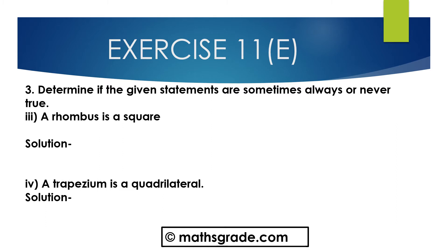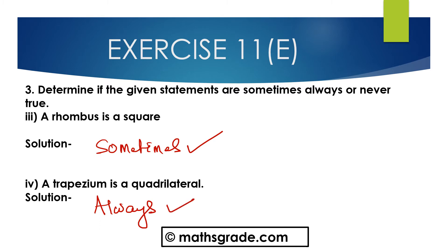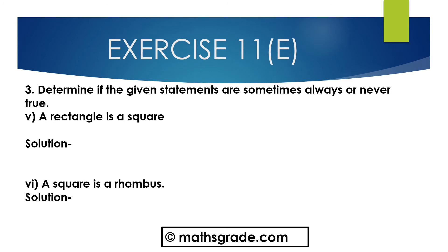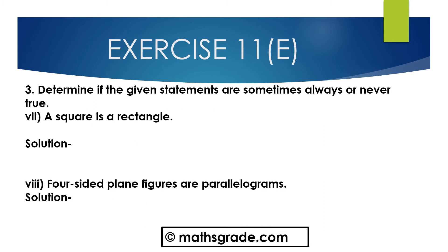Part C: a rhombus is a square — a rhombus is sometimes a square. Part D: a trapezium is a quadrilateral — a trapezium is always a quadrilateral. Part E: a rectangle is a quadrilateral — a rectangle is always a quadrilateral. Part F: a square is a rhombus — a square is always a rhombus. Part G: a square is a quadrilateral — a square is always a quadrilateral. Part H: four-sided plane figures are parallelograms — four-sided plane figures are sometimes parallelograms.